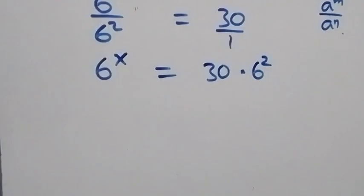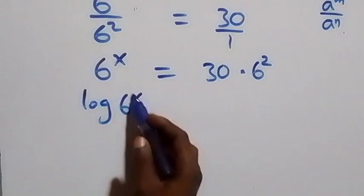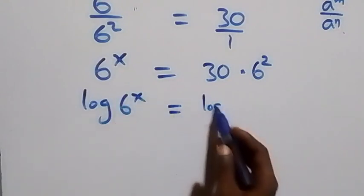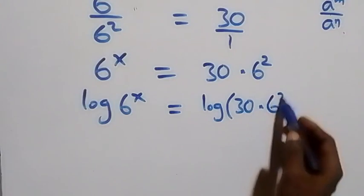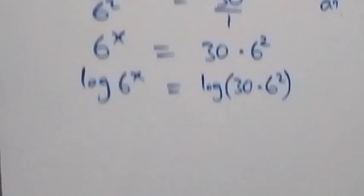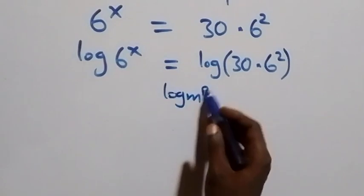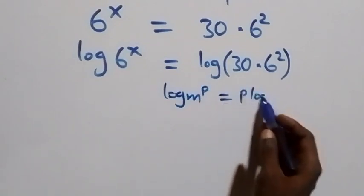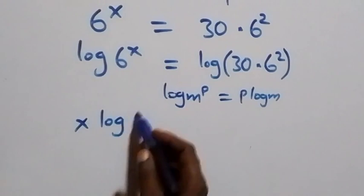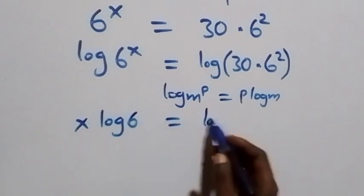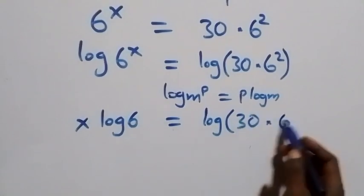The next step, we take the log on both sides. We have log of 6 raised to power x equals log of 30 times 6 squared. Applying the power law of logarithm — log m raised to power p is the same as p log m — then x log 6 equals log of 30 times 6 squared.